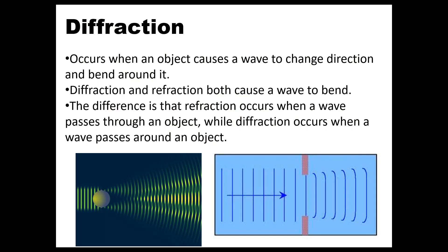All right. So the next wave phenomena that we're going to talk about is diffraction. So remember, refraction is when a wave bends because it changes mediums. Reflection is when a wave bounces off of a material. Diffraction occurs when a wave hits an obstacle and that wave has to change direction and or bend around the obstacle. So diffraction and refraction both cause a wave to bend, but they are very different. So the difference is that refraction occurs when the wave passes through an object.